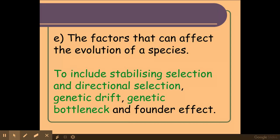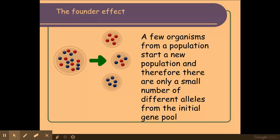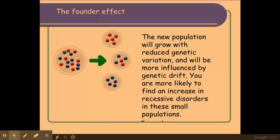The next example is the founder effect. This is where a few organisms from a population go off and start a new population. As a result, this smaller population will have a smaller number of alleles from the initial population. This new population will grow with this reduced genetic diversity and reduced genetic variation, and therefore will be more likely to be impacted by genetic drift.